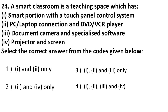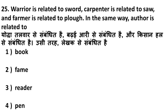Next question: a smart classroom is a teaching space which has what? A smart board with a touch panel control system — correct. A PC or laptop connection and DVD or VCR player — correct. A document camera and specialized software — correct. A projector and screen — correct. All four components are required for a smart classroom, so the correct answer includes all of the above.